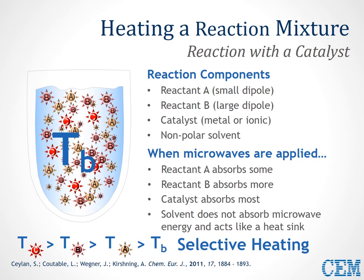We have the same two reactants as before, but now we've added a metallic catalyst. Metals can migrate but they have to be submerged and at low concentrations. When we apply microwaves, the catalyst will absorb most of the energy, and the solvent won't absorb any. Stirring is very important for creating and maintaining a homogenous heating profile throughout the reaction mixture. Without stirring, hot spots can occur where the catalyst may have settled in your vessel, which can damage your vessel and will likely result in a low yield.